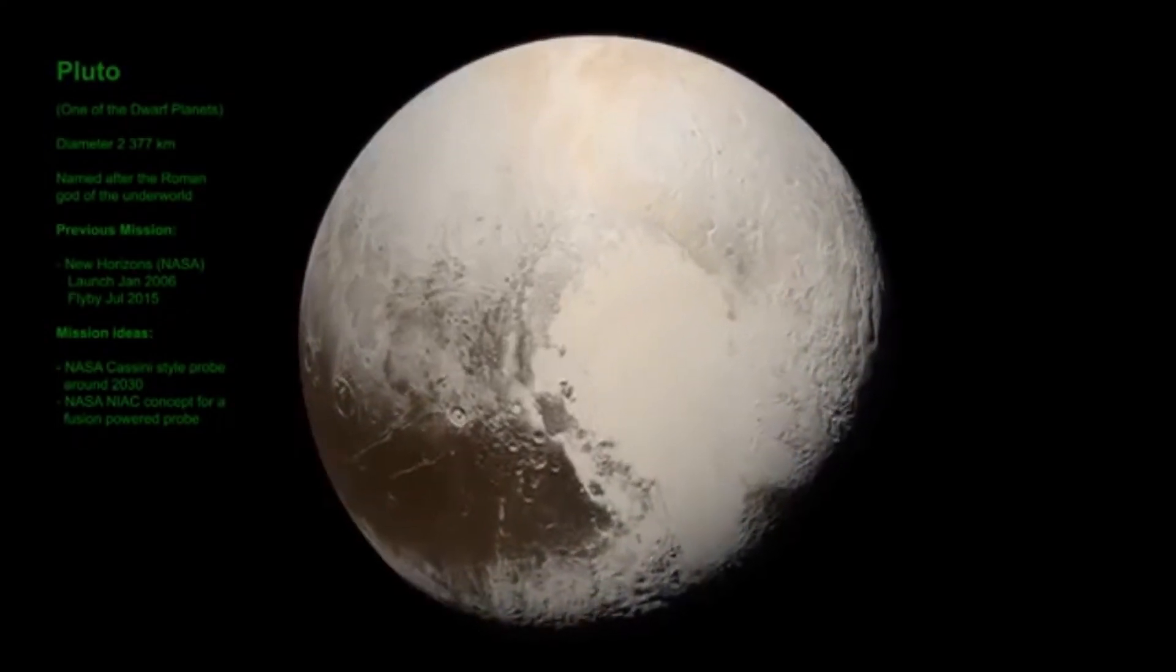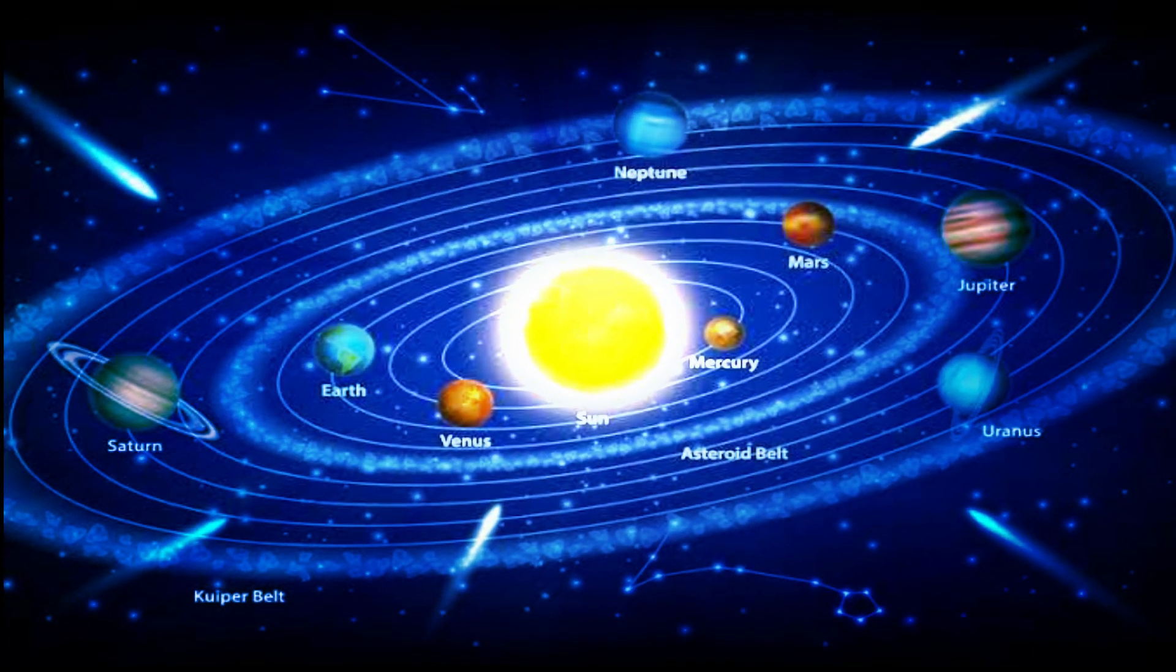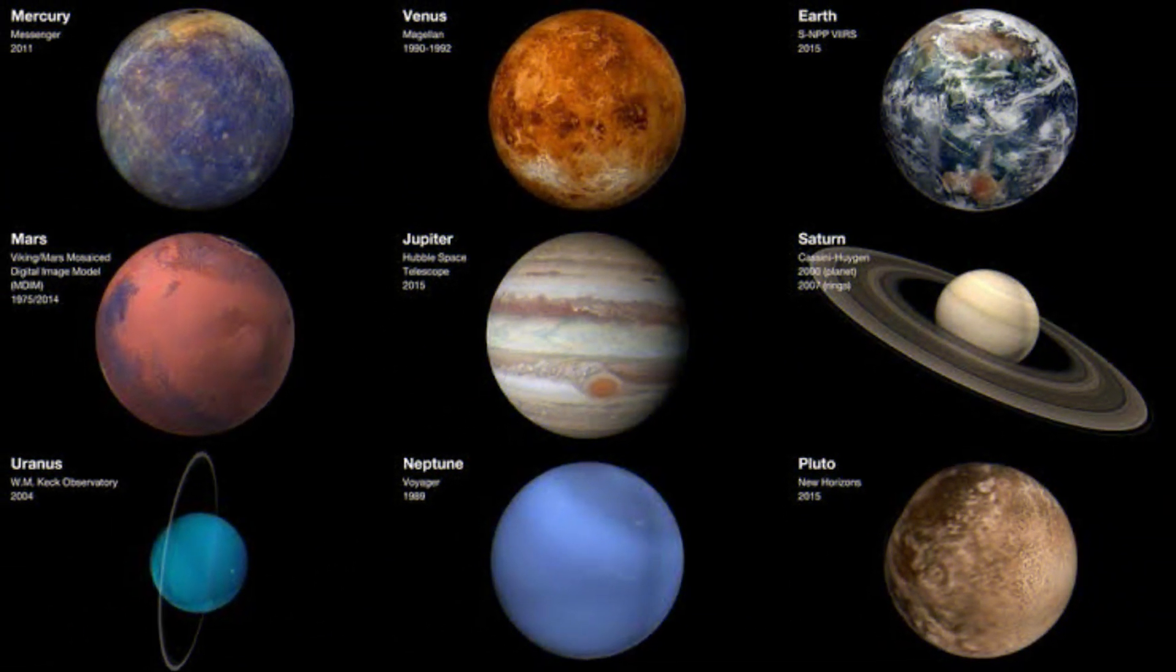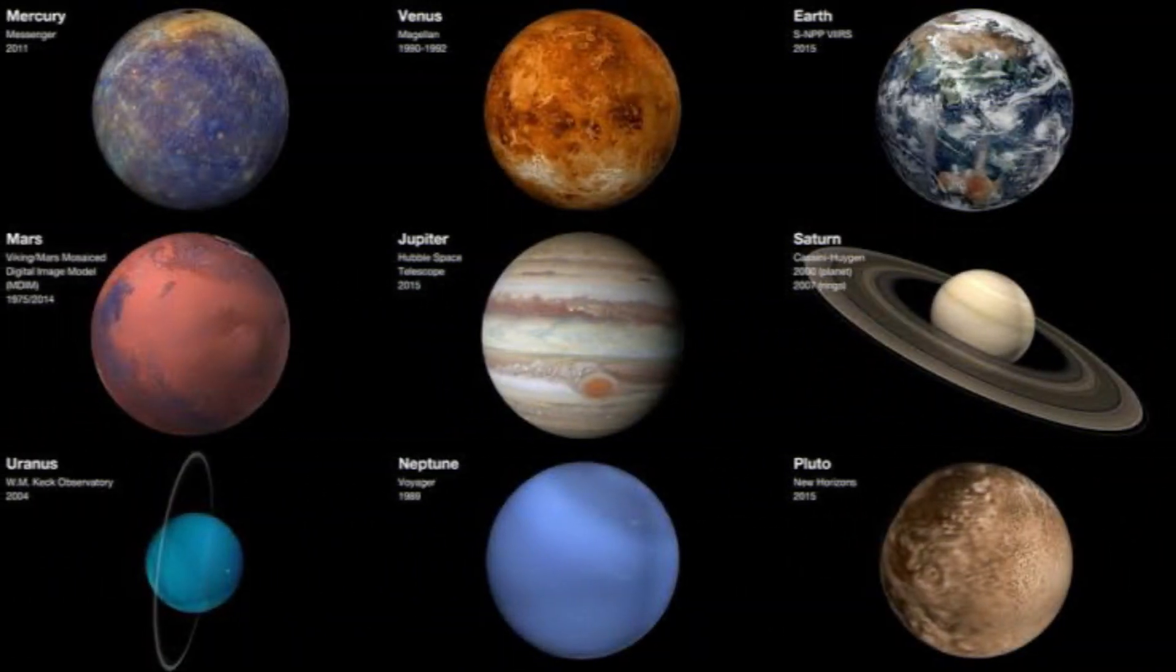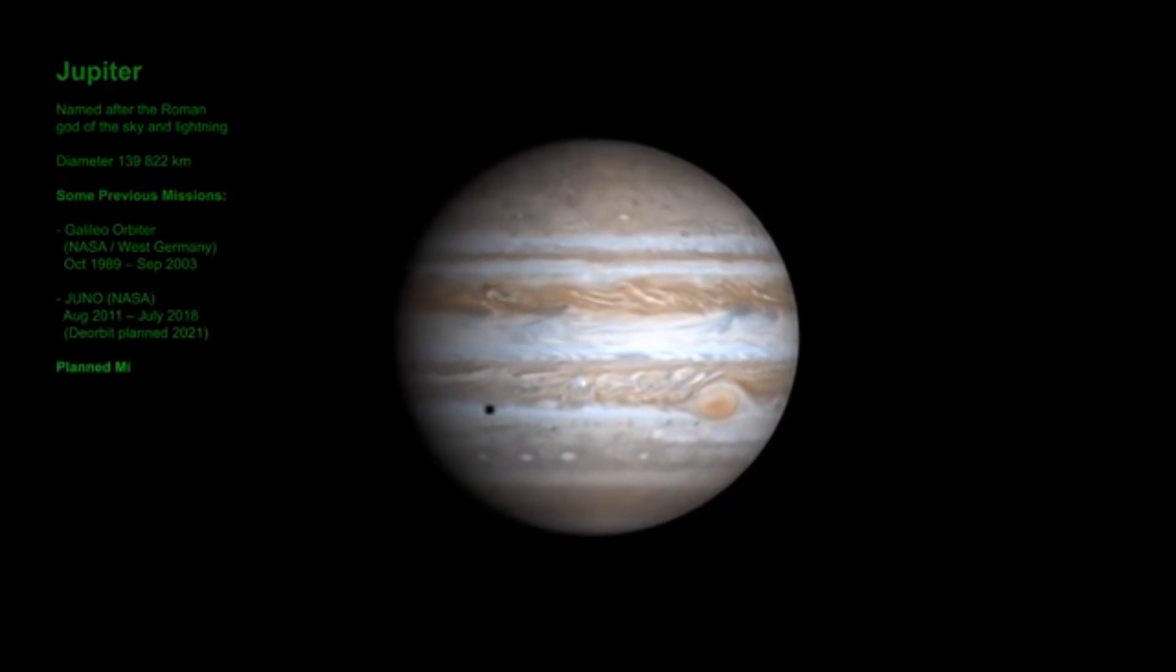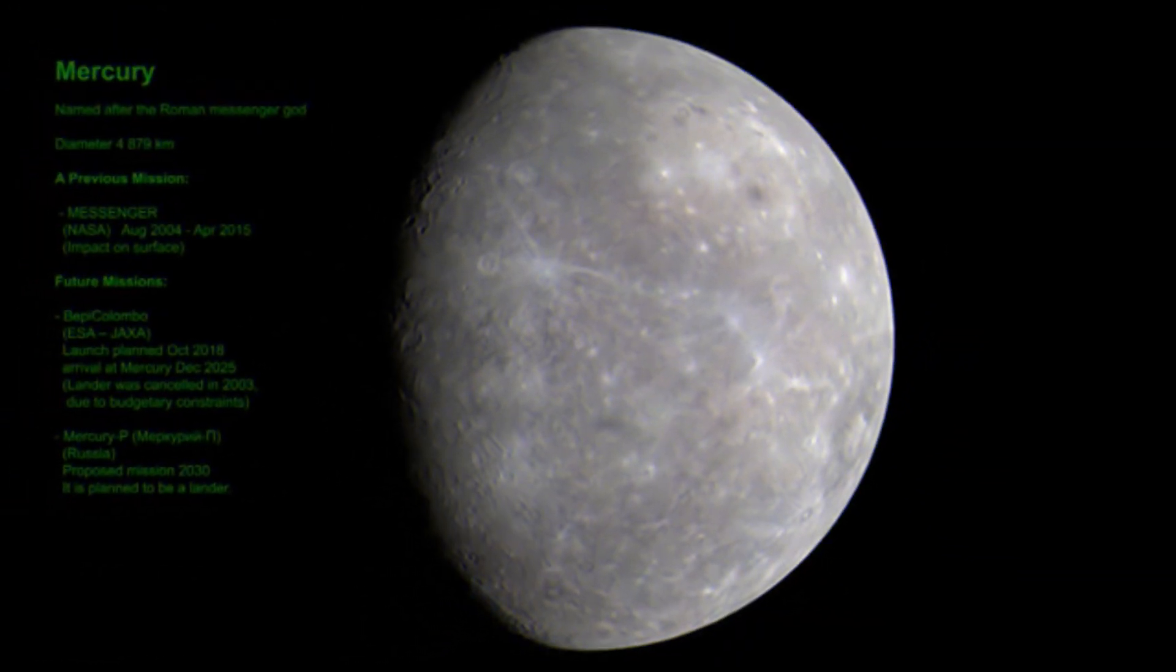We have eight planets total. First planet is Mercury, second one is Venus, third one is Earth, fourth one is Mars, fifth one is Jupiter, sixth one is Saturn, seventh one is Uranus, eighth one is Neptune. Among these eight planets the largest planet is Jupiter and the smallest one is Mercury.